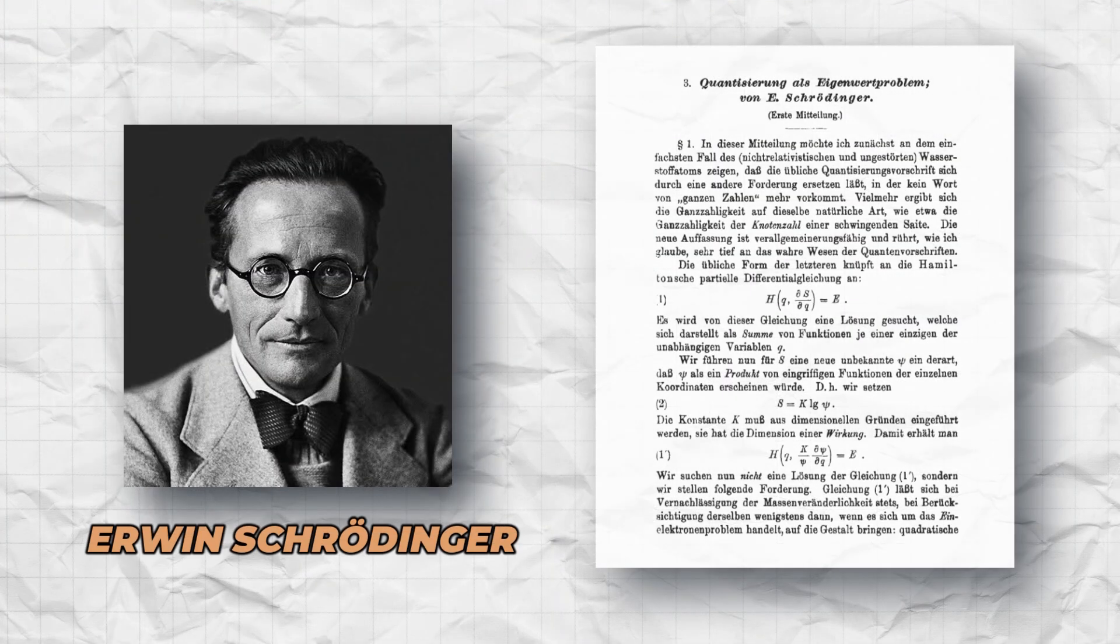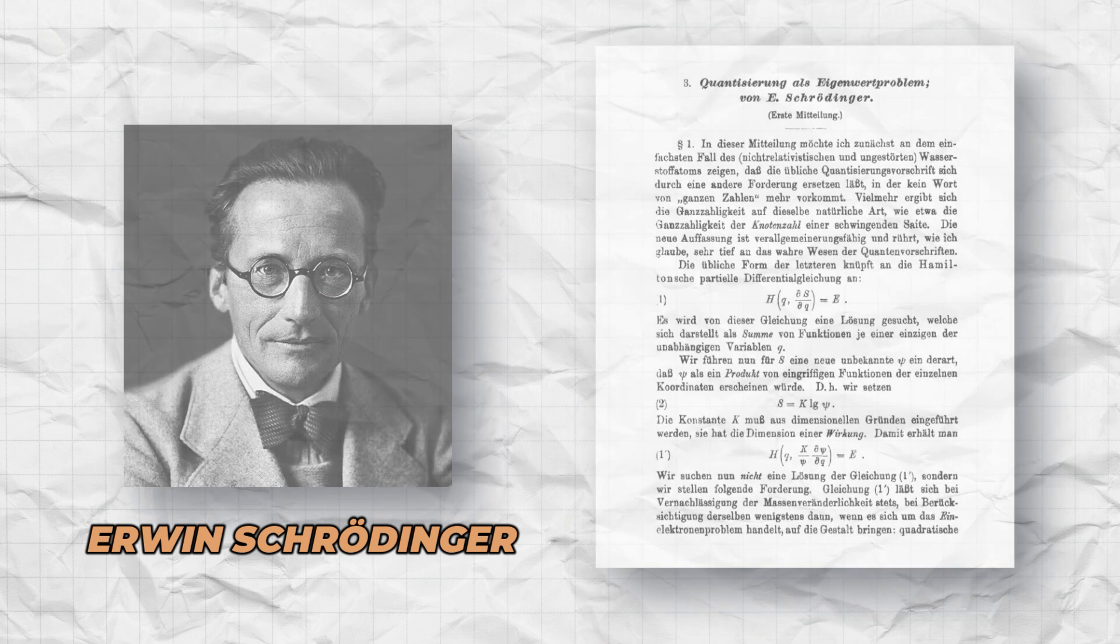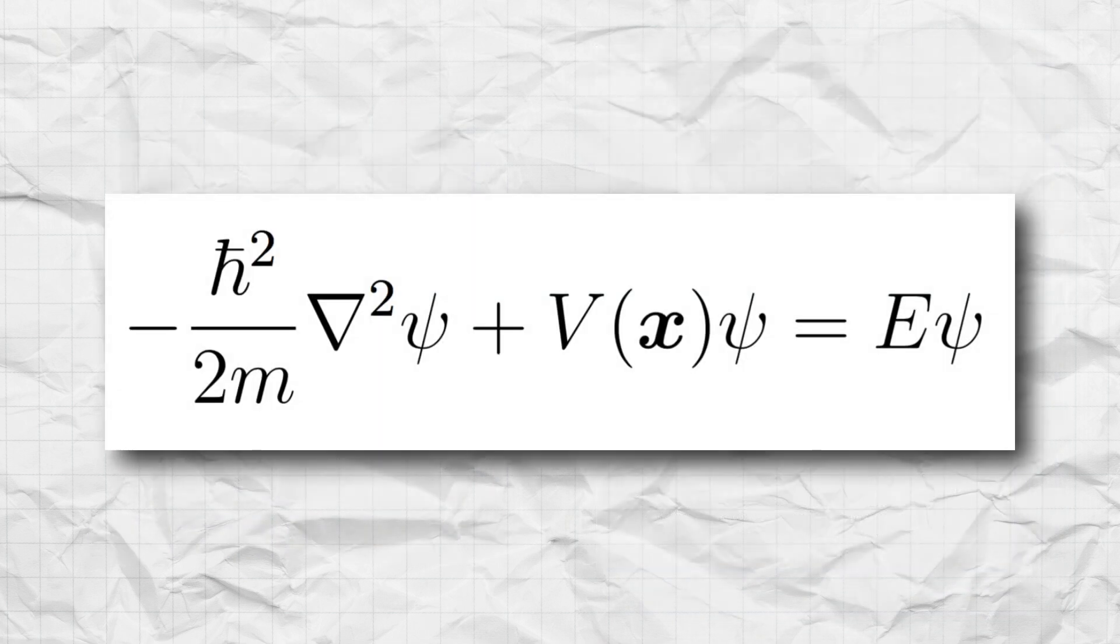January 1926, almost 100 years back, Erwin Schrödinger published a series of papers that went on to change physics. He postulated the Schrödinger equation, which became the foundational pillar of quantum mechanics and as a result, modern physics.